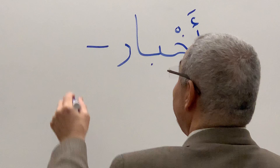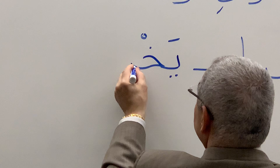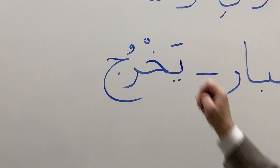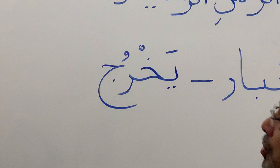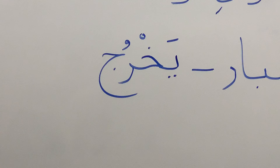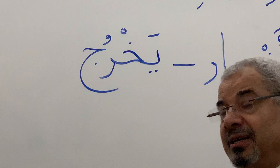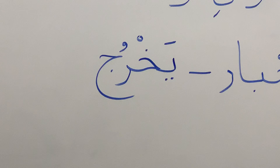The second word: Ye with Fatha, Kha with Sukoon, Re with Damma, Jim — Yakhruj. He goes out. Yakhruj min al-bayt — he goes out from the house. Takhruj Barbara min al-bayt. Takhruj Ka min al-dar. Yakhruj Ahmed min al-maktab — the office. So Kha in the middle: Yakhruj.